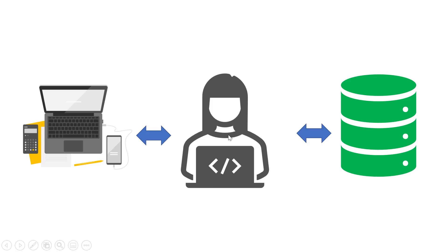There must be something called an API in between the database and the Angular application. The Angular application will interact only with the API, and the API will interact with the database. The technology of this API can be anything — Node.js, .NET, PHP, Java, or any other applicable technology. This communication between Angular and the API happens using the HTTP protocol, and Angular provides great support for HTTP communication.